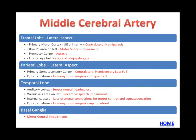The frontal and parietal lobes are impacted in a similar pattern. Structures affected include the primary motor cortex, Broca's area, premotor cortex, and frontal eye fields from loss of blood supply to the lateral frontal lobe. The primary somatosensory cortex for the upper extremity and optic radiations are impacted from the lateral parietal lobe. It is extremely important to differentiate between anterior and middle cerebral artery strokes, as symptoms will be different and your treatment approach must be different accordingly.